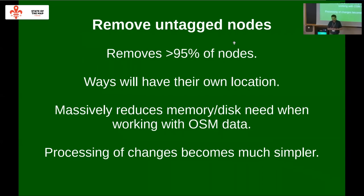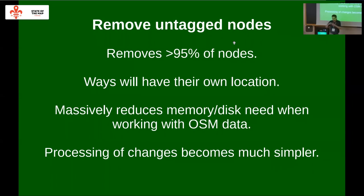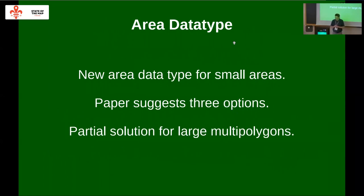Nowadays, if you want to work with the planet for most things, you need 64 or 128 gigabytes of RAM — otherwise it's not going to work. That's not something an activist somewhere has on their second-hand computer. So I think this is the most important thing to solve. If we remove untagged nodes — nodes are used for two things: points of interest, and lending their location to ways and relations — if we remove more than 95% of nodes that are only used for their location and give those locations to the ways, we can solve a lot of these problems.